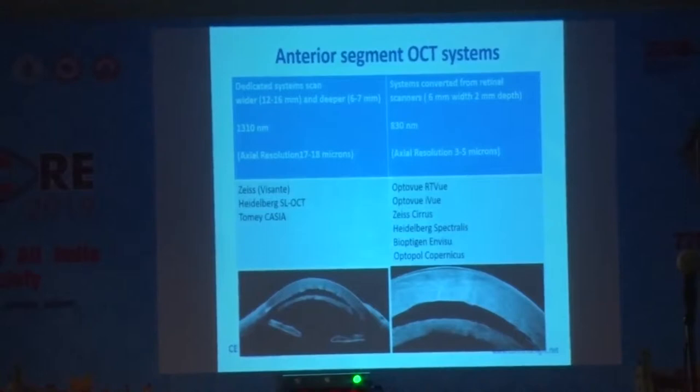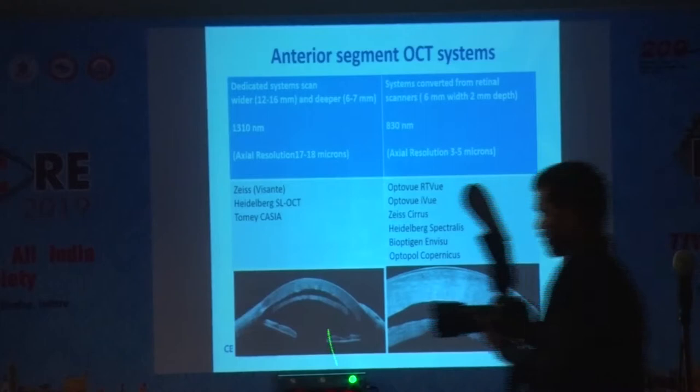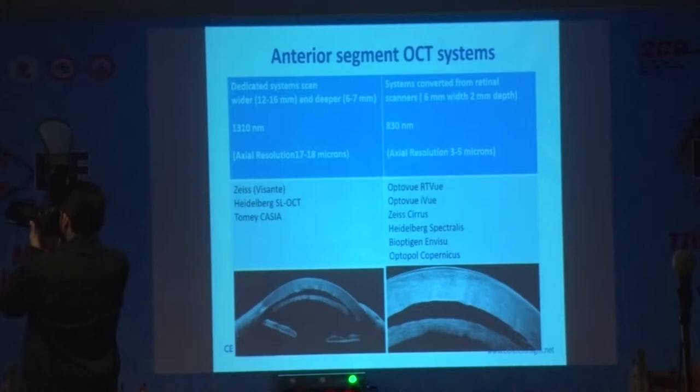Just a brief about the existing AS OCT systems. Currently, we have two types: dedicated anterior segment OCT systems and those converted from retinal scanners. The dedicated systems use a wavelength of 1310 nanometers and provide wider and deeper scans, compared to converted retinal scanner systems that use 830 nanometers and provide shorter scans but with much higher resolution.